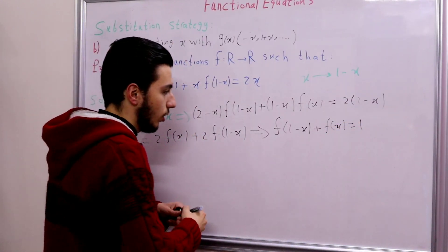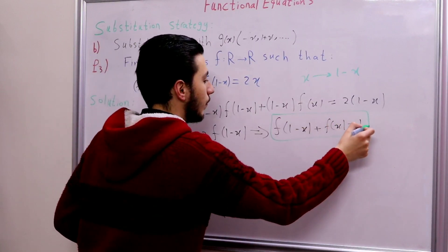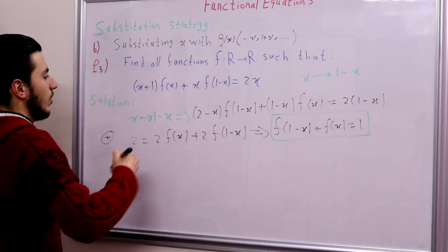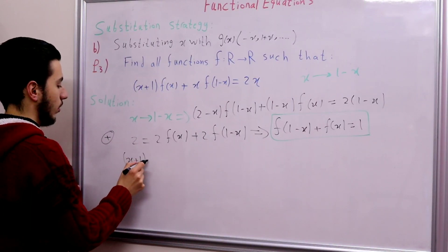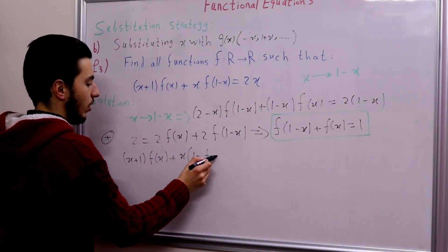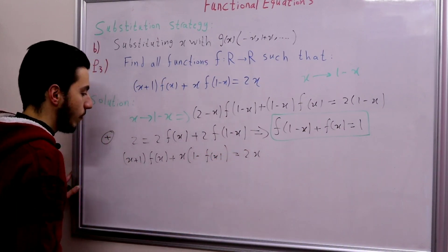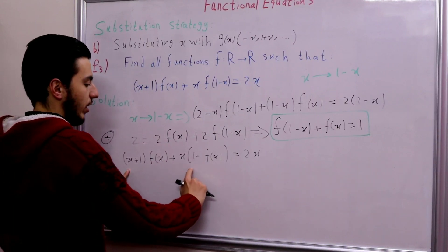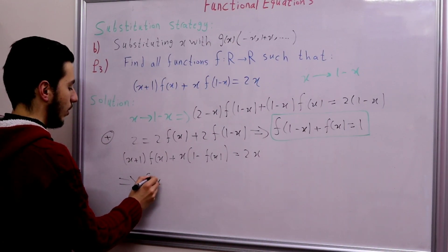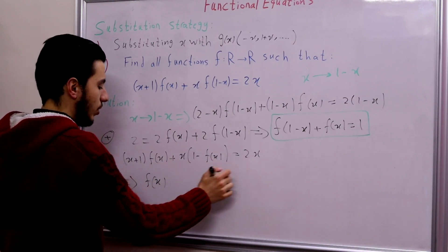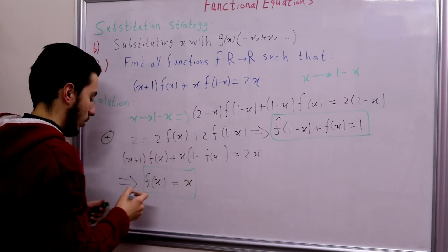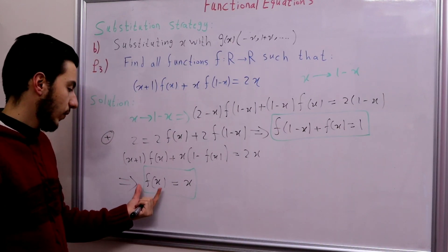This means f(1 − x) + f(x) = 1, which is a nice equation. So we can substitute f(1 − x) = 1 − f(x) back into the first equation. We then have (x + 1)·f(x) + x·(1 − f(x)) = 2x. The x·f(x) and −x·f(x) terms cancel, leaving f(x) + x = 2x, which means f(x) = x.